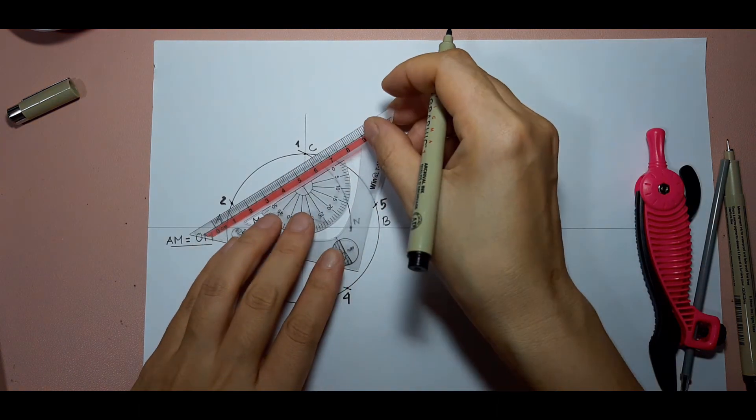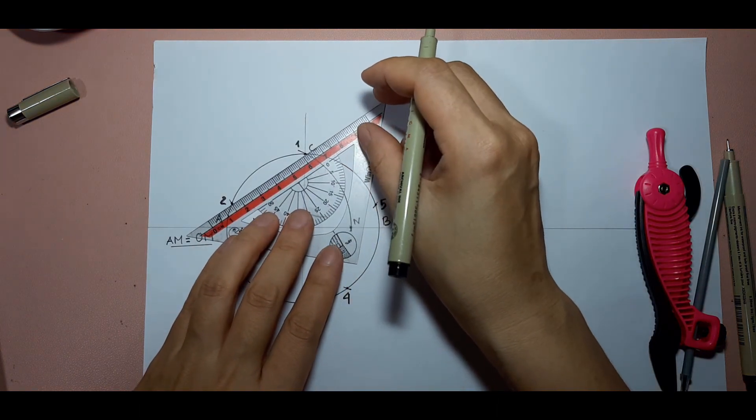The pentagon that is created by these five points is inscribed in the given circle.